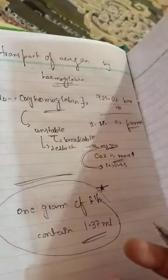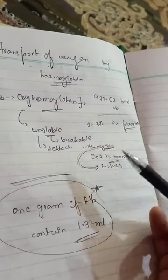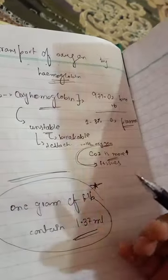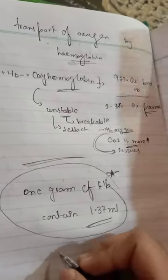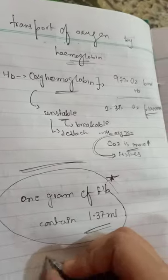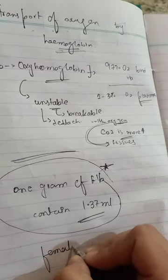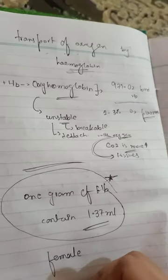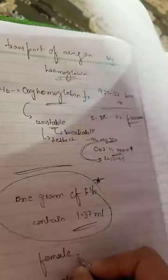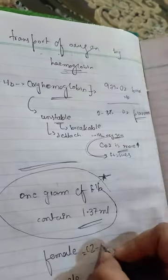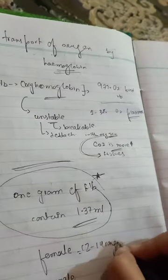So we measure hemoglobin per 100 milliliters of blood. If we talk about the normal range in females and males — in females the normal range is 12 to 14 grams of hemoglobin.